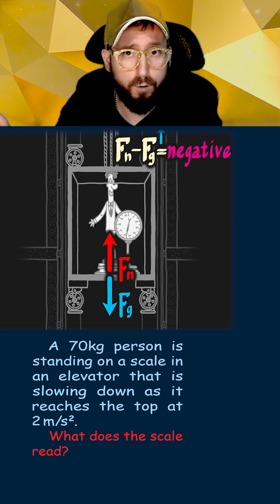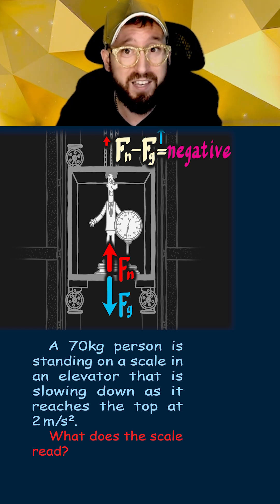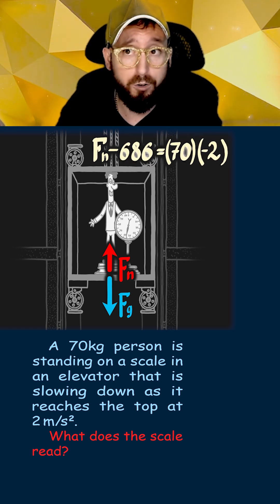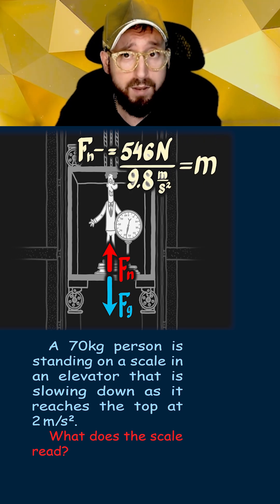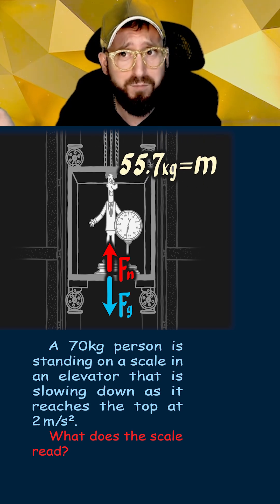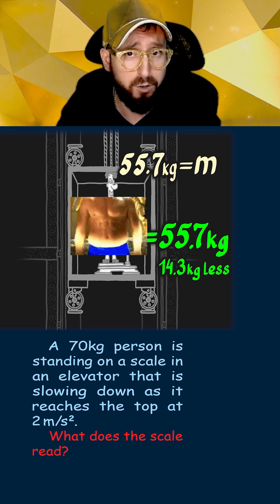What this means when looking at our force formula is that the normal force must be less than the force of gravity in order to get a negative acceleration. So plugging in our numbers, we get a normal force of 546 newtons. Dividing by 9.8, this gets us an apparent weight of 55.7 kilograms, which is 14.3 kilograms lighter than our regular weight of 70 kilograms.